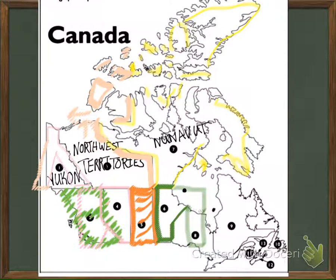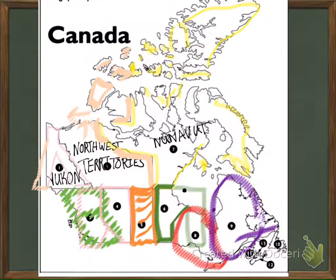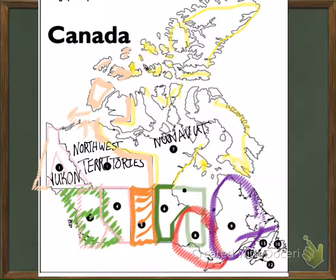Next, we have Ontario. I really had to stretch my mind, but I was able to see a very lopsided O for Ontario. And next, Quebec — I kind of see a Q there. If you use your imagination and see the part that sticks out towards the Atlantic Ocean as the stem of the capital Q.